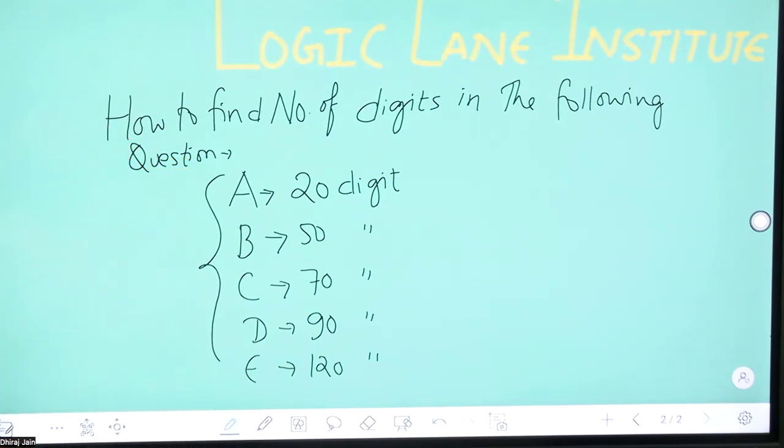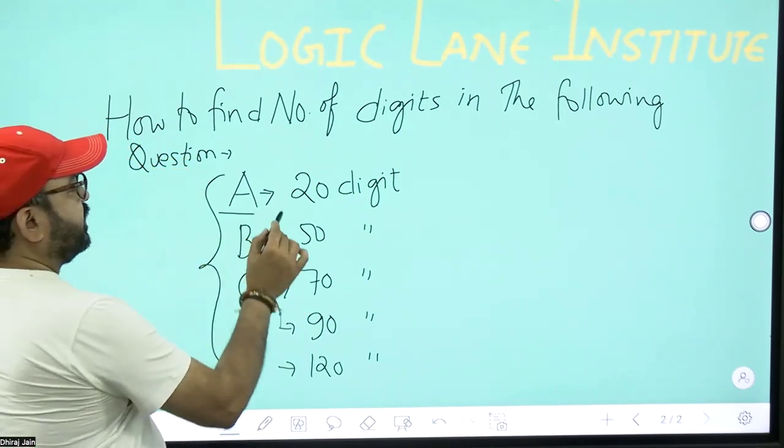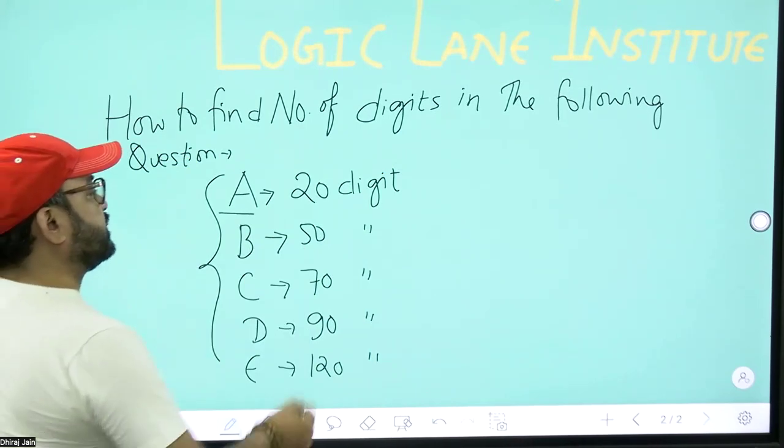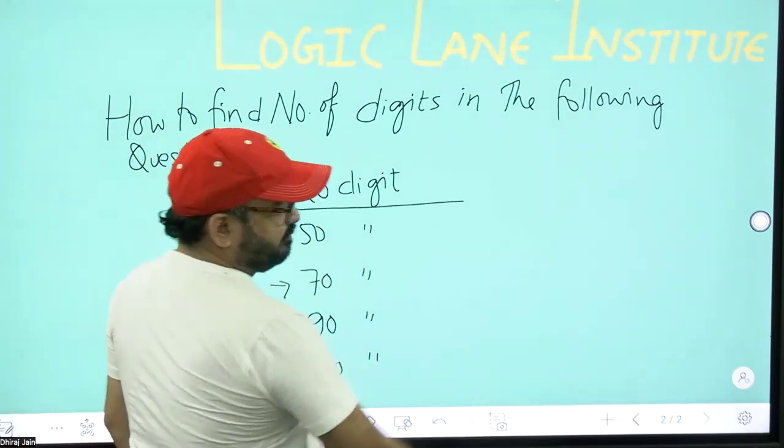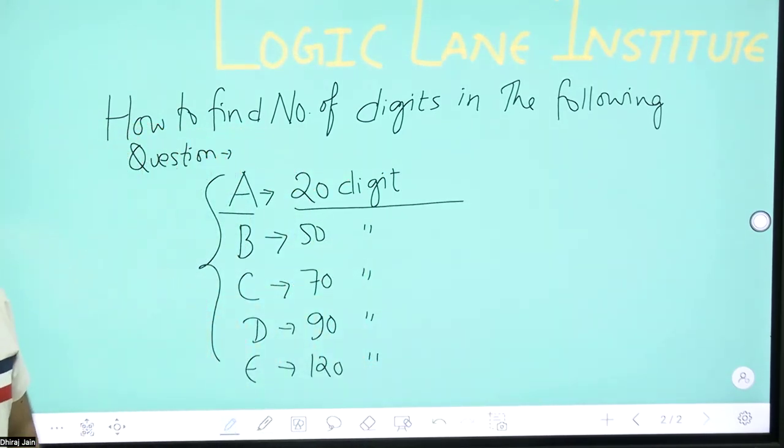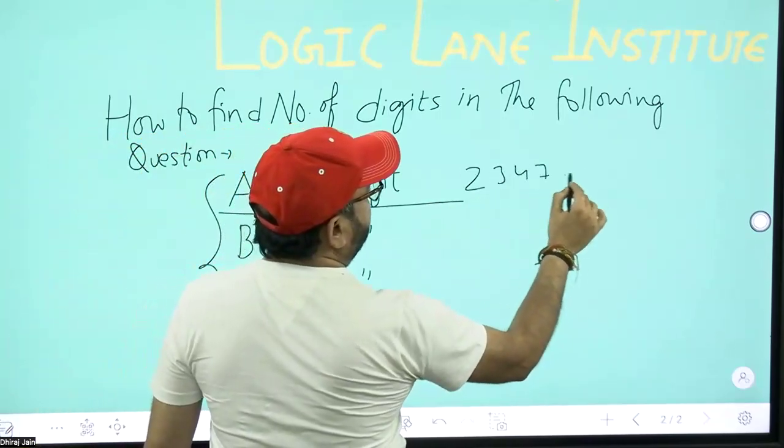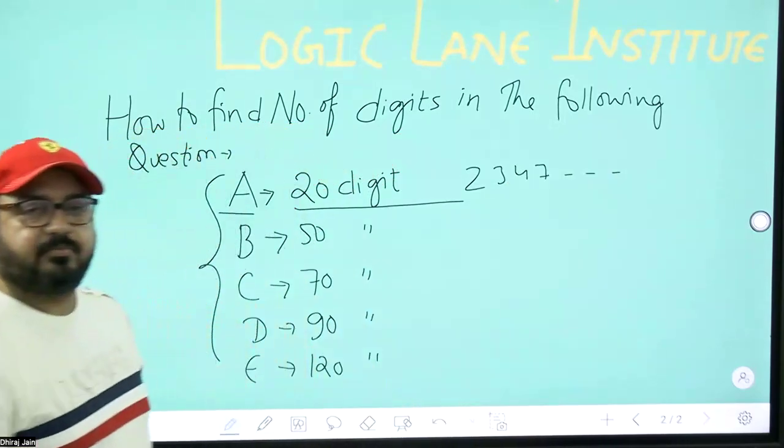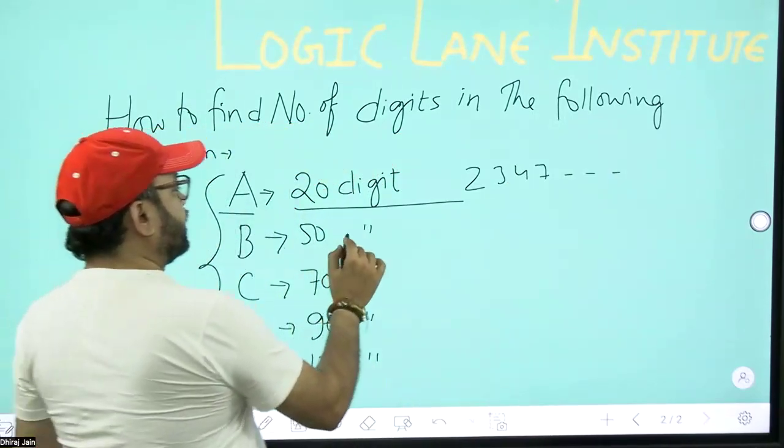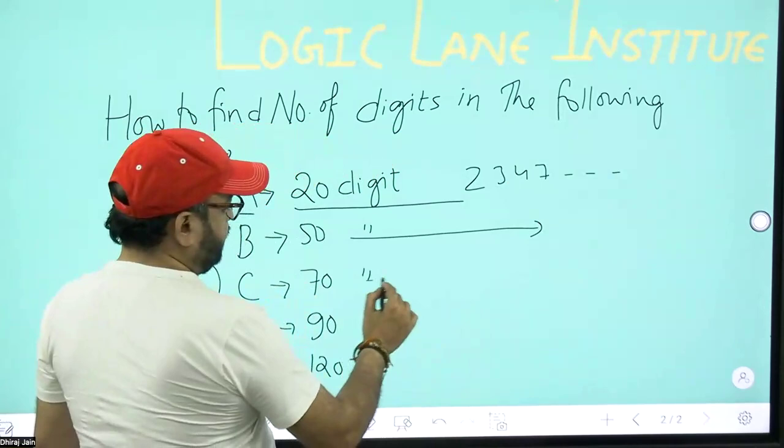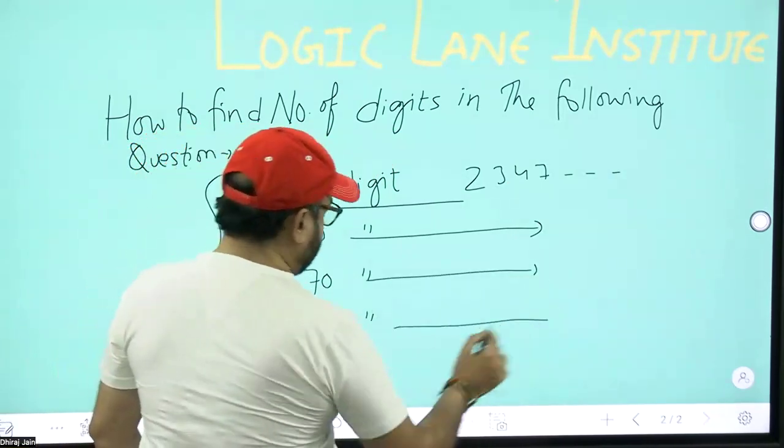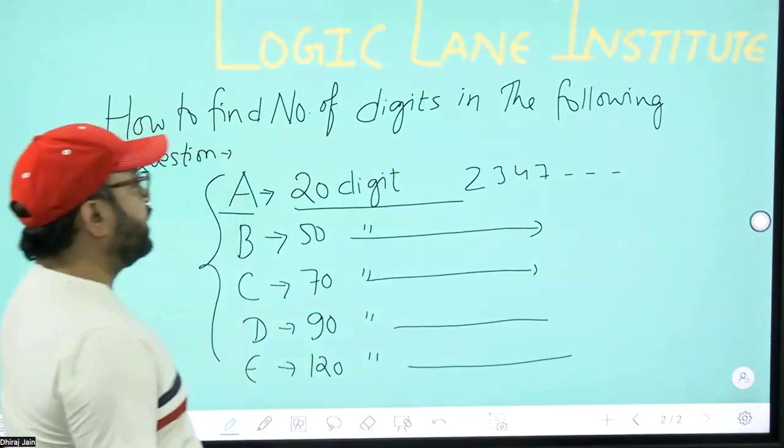So, as you can see that, suppose that it's alphabet A, which means 20 digits. It means 2, 3, 4, 7. It means 20 digits. This is 50 digits. This is 70 digits. This is 90 digits. And this is 120 digits.